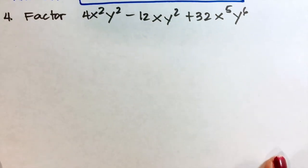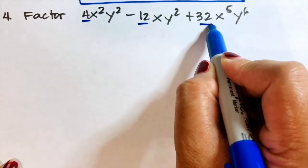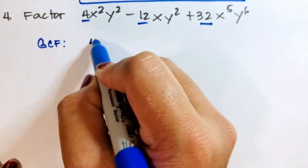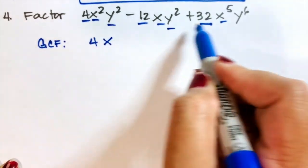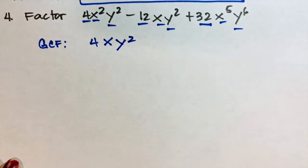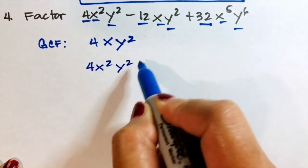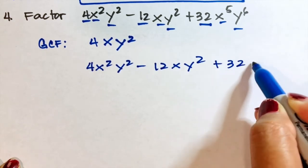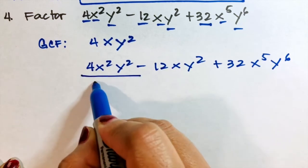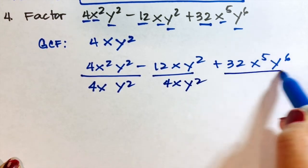For our last example, following the two easy steps — find the GCF and divide — we have 4x squared y squared minus 12xy squared plus 32x to the fifth y to the sixth. The GCF of 4, 12, and 32 is 4. The GCF of x squared, x, and x to the fifth is x. The GCF of y squared, y squared, and y to the sixth is y squared. So the GCF is 4xy squared.